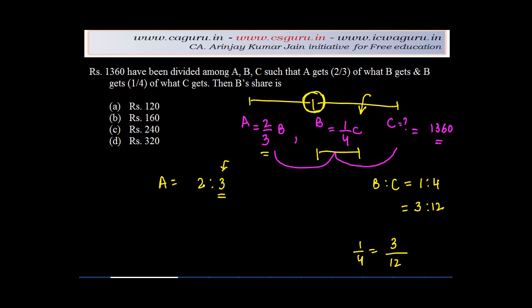Now what we have is, A is to B is equal to 2 is to 3, and B is to C is equal to 3 is to 12. In such a case, when you have three variables where the ratio of B in both the cases is same, then you can easily write this as A:B:C is equal to 2:3:12.